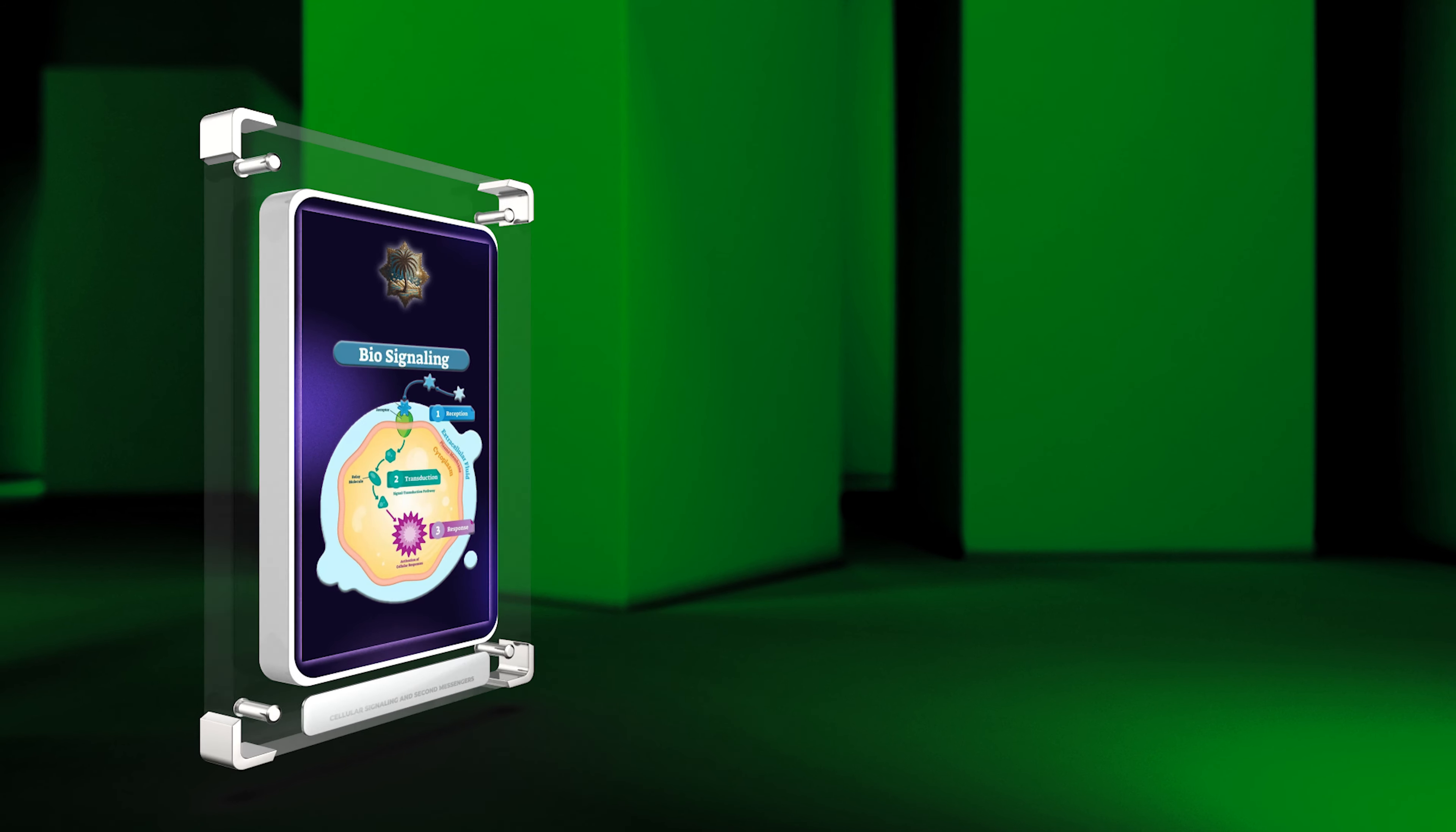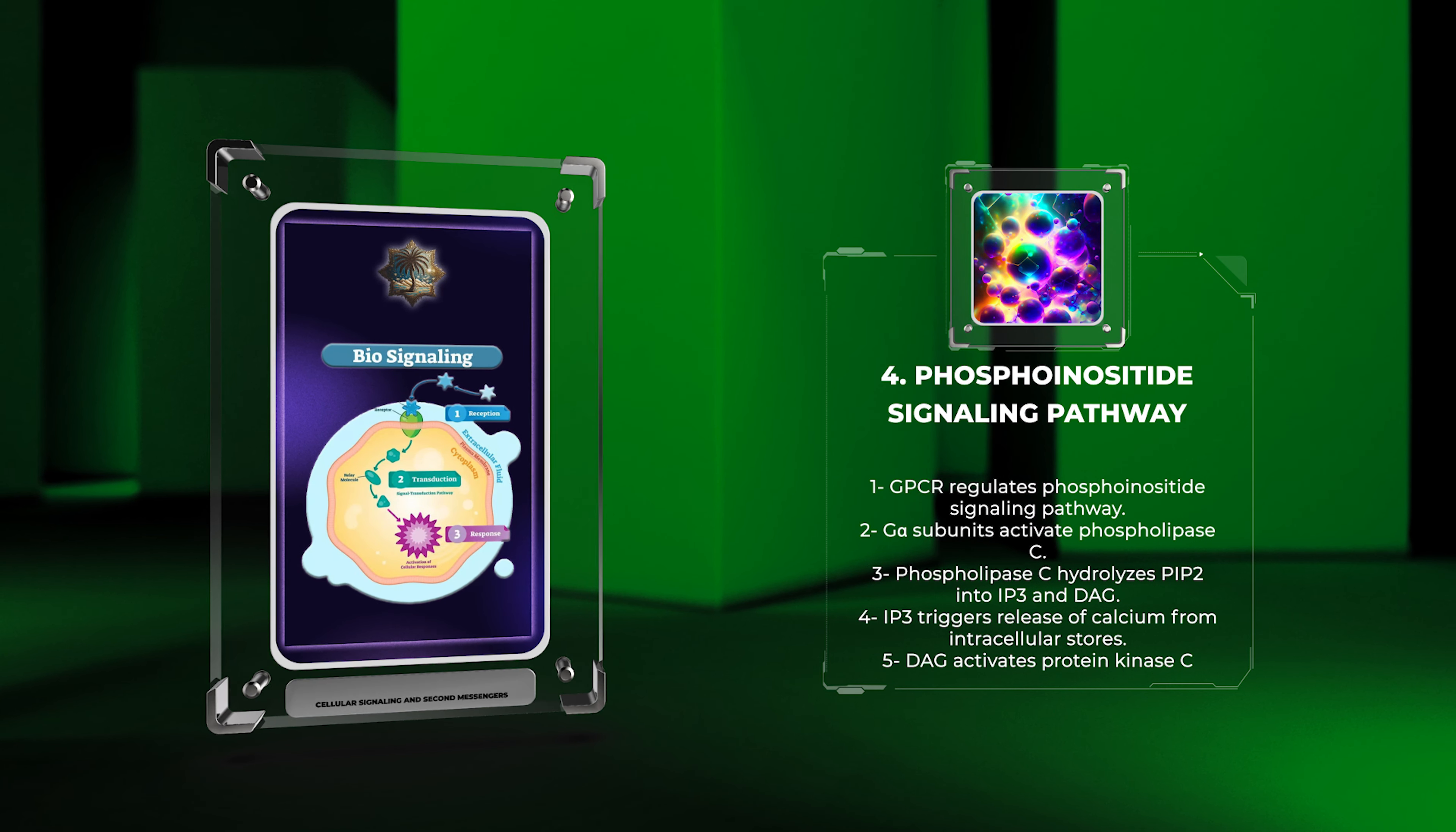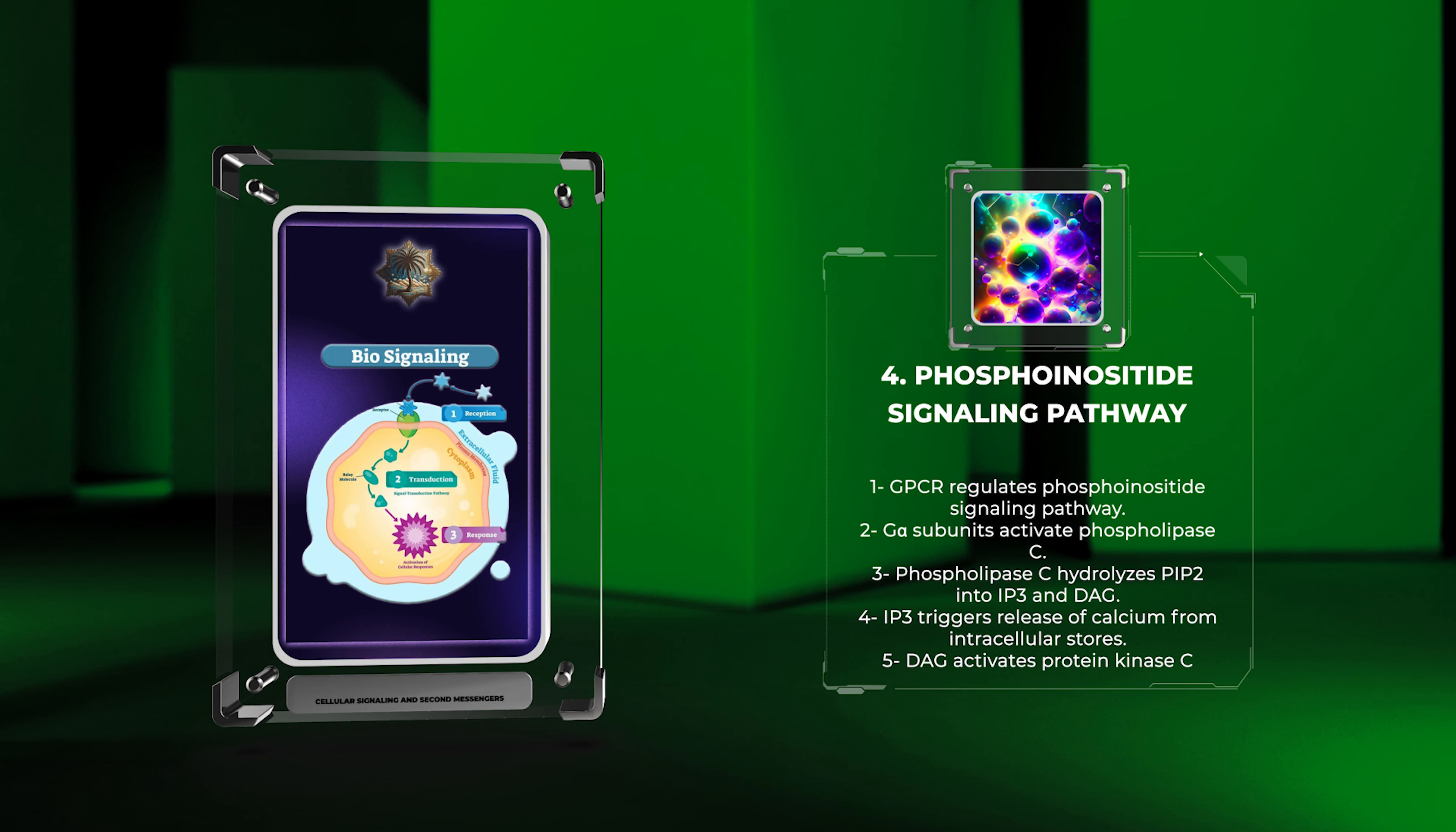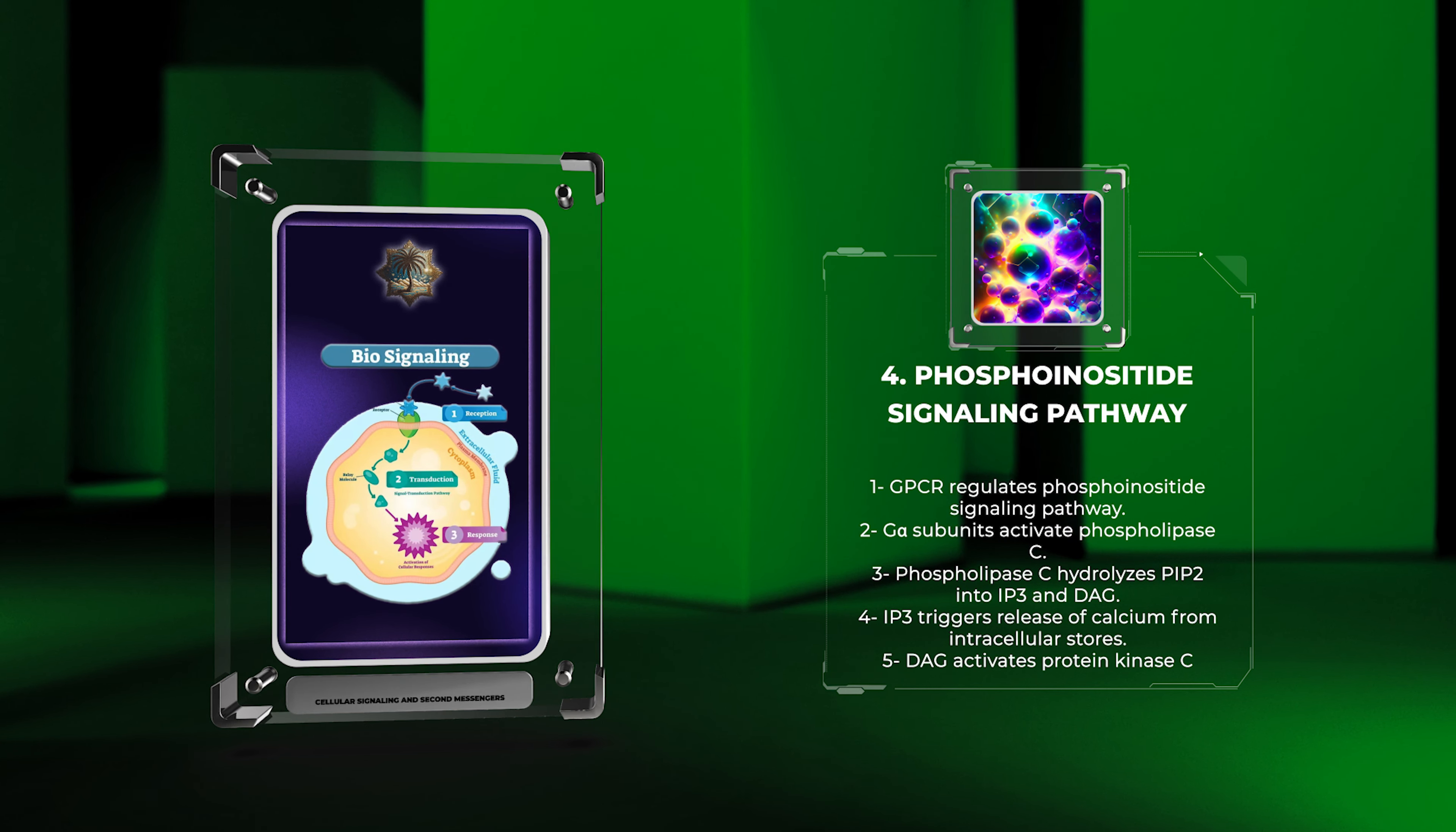Another important signaling pathway regulated by GPCRs is the phosphoinositide signaling pathway. Upon activation, G-alpha subunits can activate phospholipase C, which hydrolyzes phosphatidylinositol 4,5-bisphosphate, PIP2, into inositol trisphosphate, IP3, and diacylglycerol, DAG.